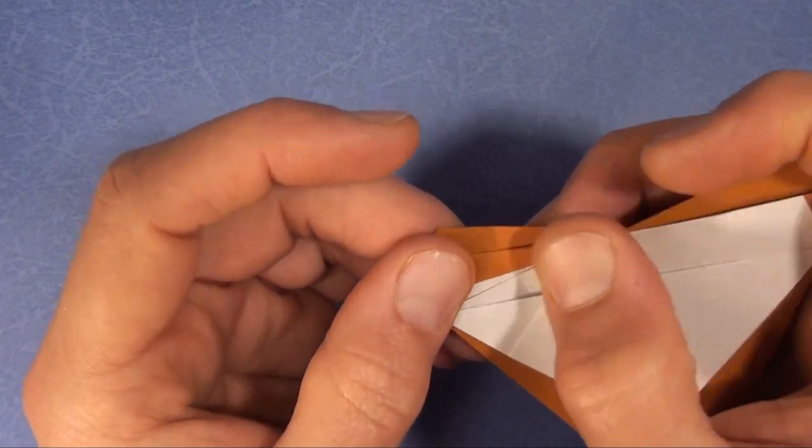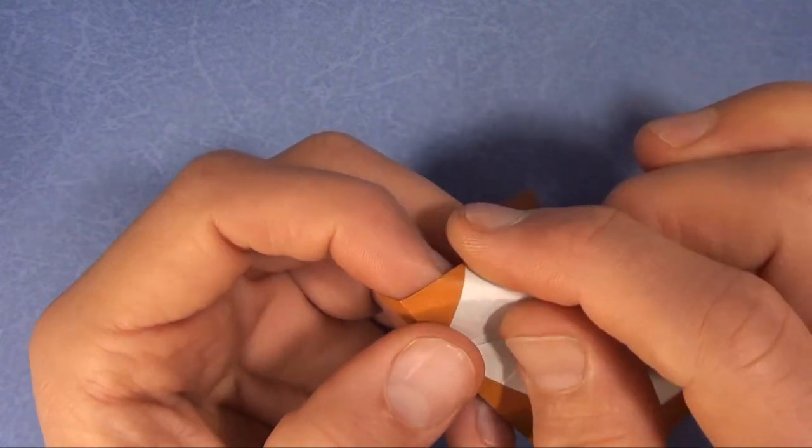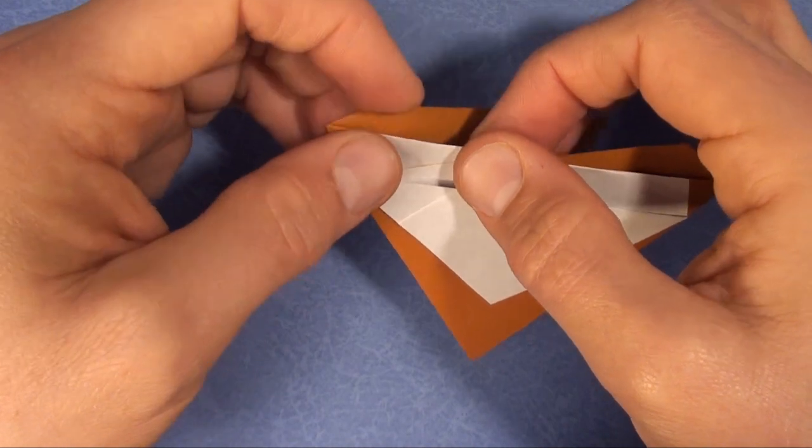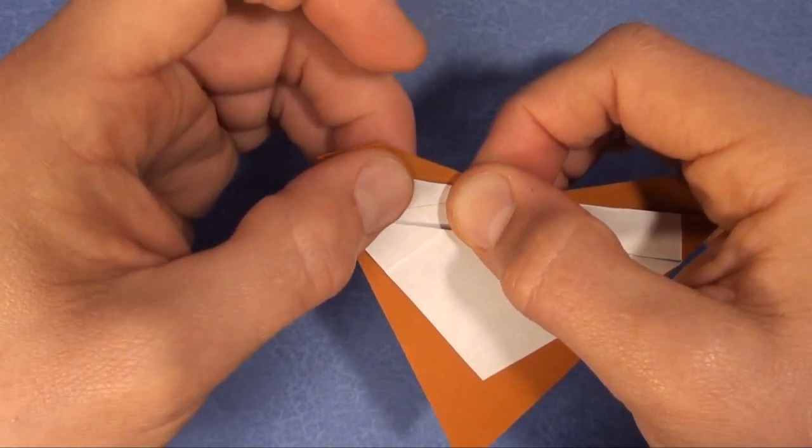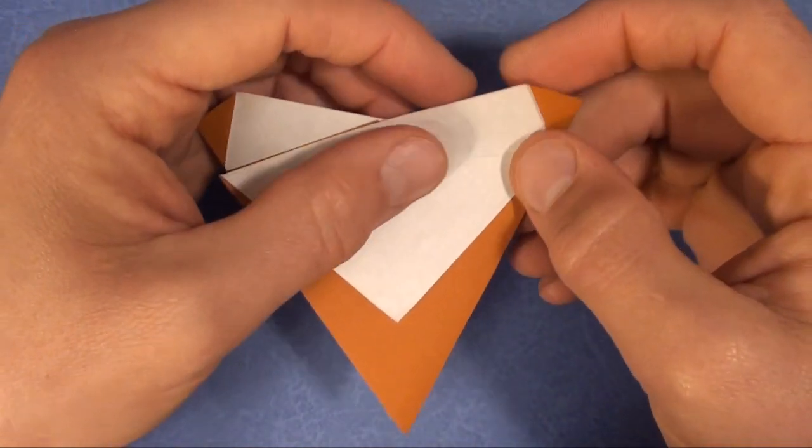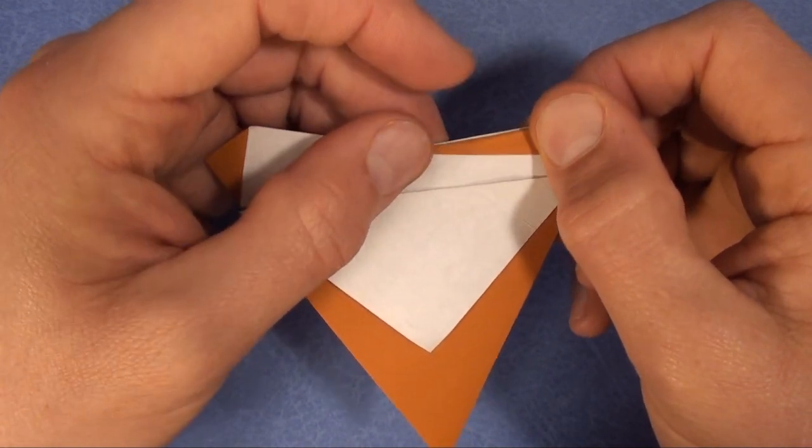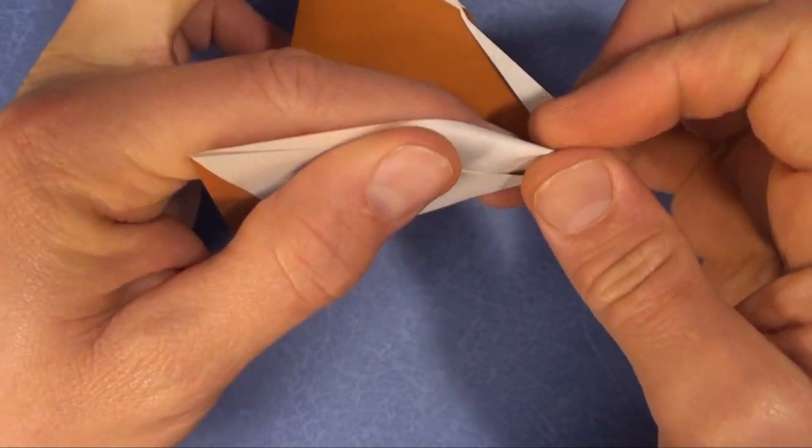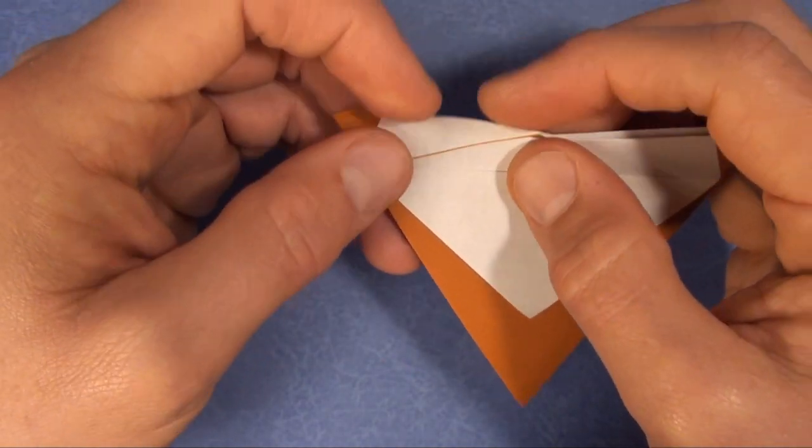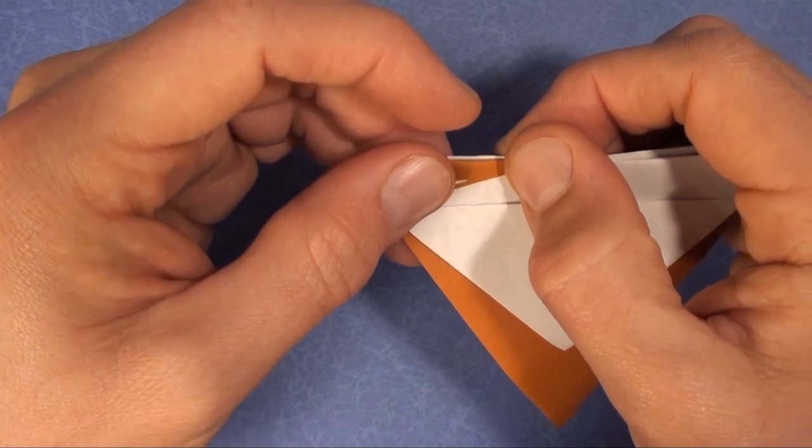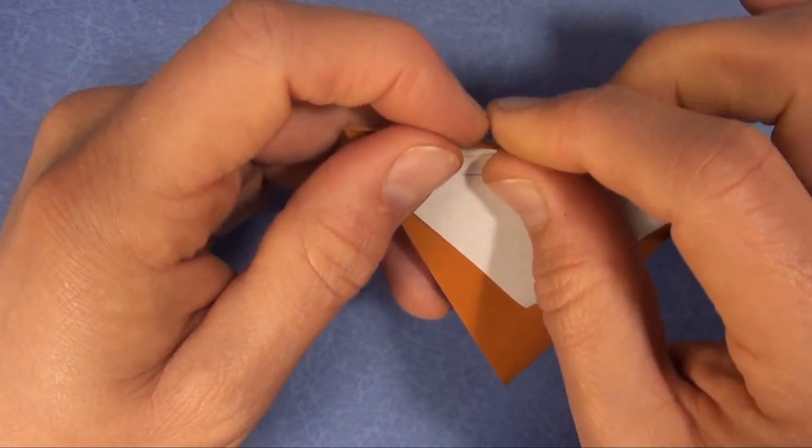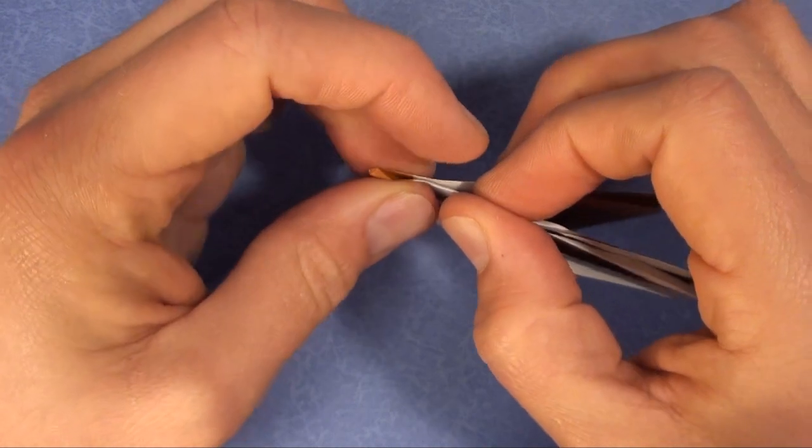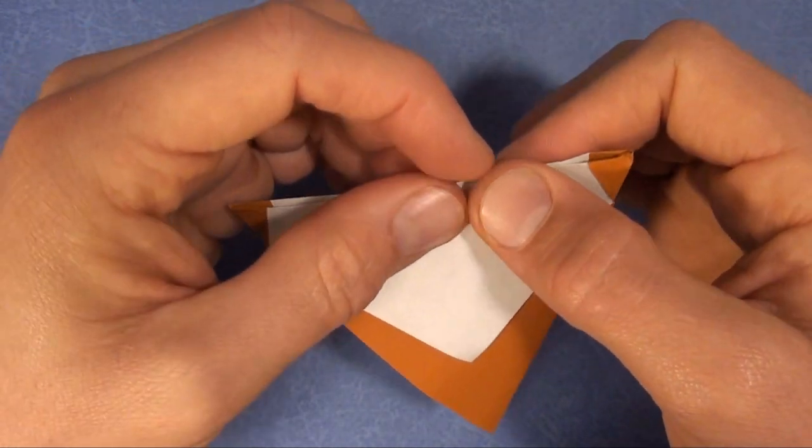Valley fold. And reverse the crease. Camera's having trouble here. And turn it over. Valley fold. And reverse the crease. Are we having fun yet? Alright.